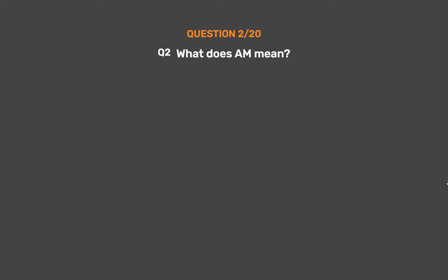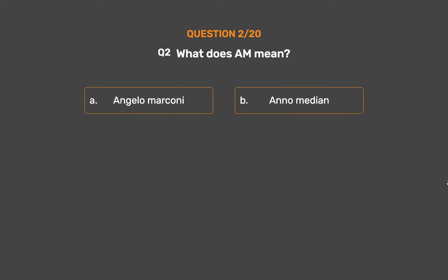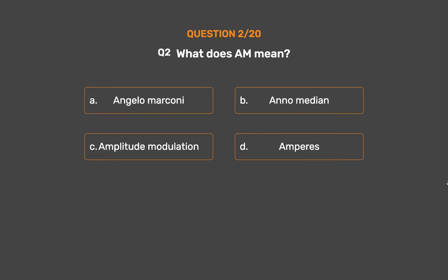Question number 2. What does AM mean? Option A: Angelo Marconi. Option B: Ano Median. Option C: Amplitude Modulation. Option D: Amperes.